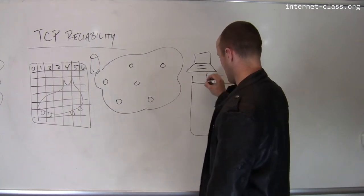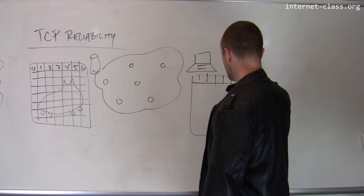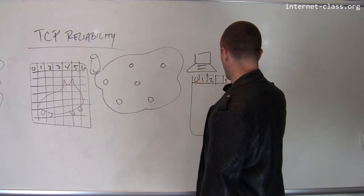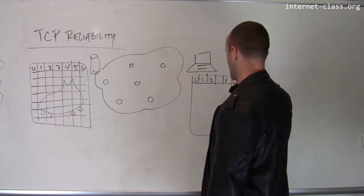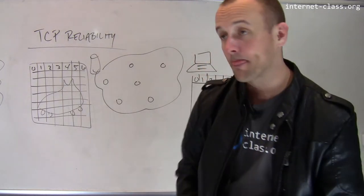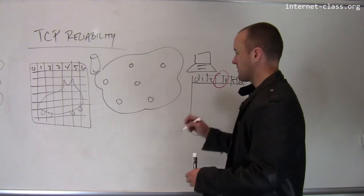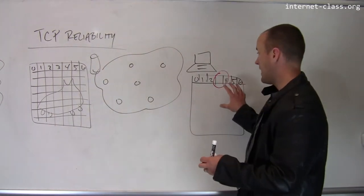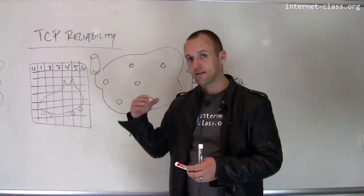So the receiver receives maybe chunks zero, one, two, four, five, and six. So it's missing chunk three. Chunk three was lost, it's dropped at a router somewhere, who cares? The problem is I don't have all of the information that the sender sent me.